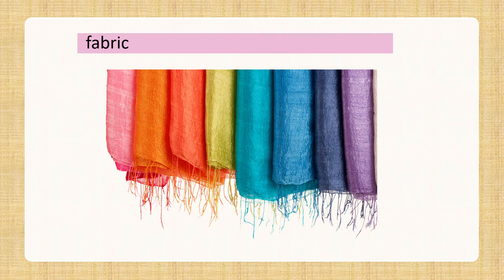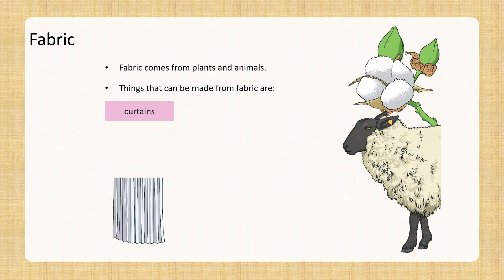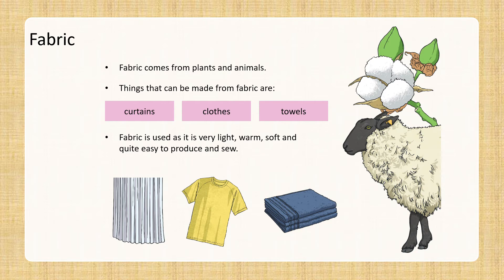Fabric — we all love it, isn't it? Our clothes are made of fabric, but we use fabric for many other things too. Can you identify three other objects? Fabric comes from plants and animals. Things that can be made from fabric are curtains, clothes, and towels. Fabric is used as it is very light, warm, soft, and quite easy to produce and sew.